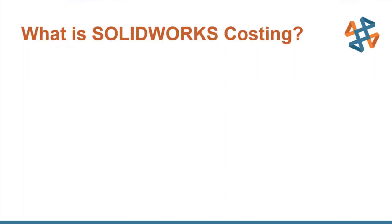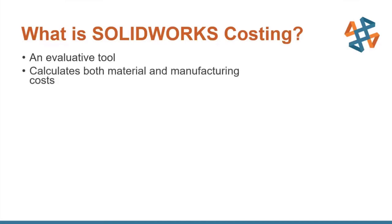SolidWorks Costing is an evaluative tool that allows you to make manufacturing decisions that impact the total cost of your parts and assemblies. This gives the designer the power to consider cost to manufacture before the design is released — something that's not always inherent in a SolidWorks design environment. Costing breaks down the cost to produce into both material and manufacturing costs, so if 70% of the cost goes to material, you might want to find a different material to reduce that.